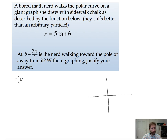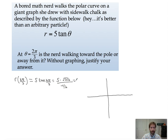First, I'm going to find r of two pi over three to figure out where we are. r of two pi over three equals five tan of two pi over three, which is five times sine of two pi over three over cosine of two pi over three — that's root three over two, all over negative one half. This simplifies to negative five root three. We don't really care about the exact value so much as the fact that it is negative. Since r is less than zero, now we need to find dr/dθ.